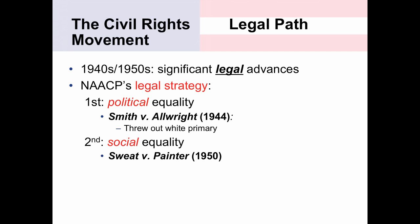Another example is Sweat v. Painter in 1950, involving the University of Texas All Black Law School. Students were able to show that the facilities were not equal — fewer professors, a library not as well stocked. The Supreme Court agreed, yet the ruling only applied to the University of Texas Law School — it was a very narrow decision. The Supreme Court, even in the 1950s, was still operating under the Plessy v. Ferguson notion of separate but equal. They simply found that the University of Texas Law School was not equal in its separation.